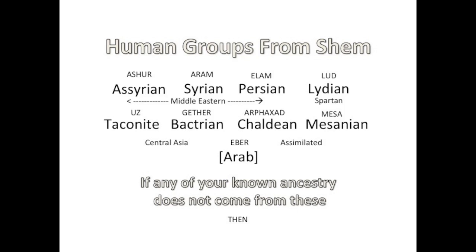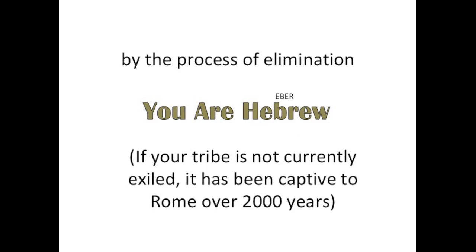Arabs, plus Arabs from Eber, describe the ethnicity of Ishmael's descendants, even though in modern times Arab is considered to be a language group. If your ancestry does not trace to any Middle Eastern group that you know of, and it identifies as Adam's seed, then by the process of elimination, you are from a lost Israelite tribe.